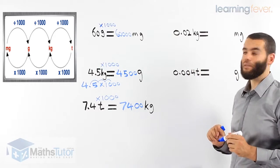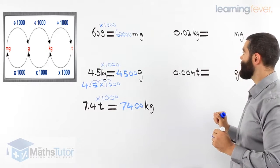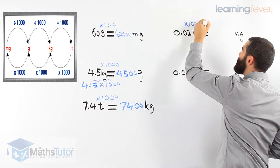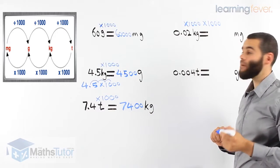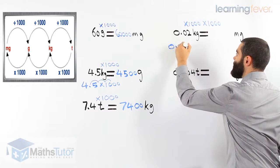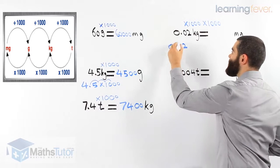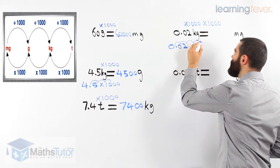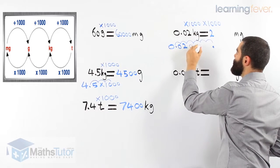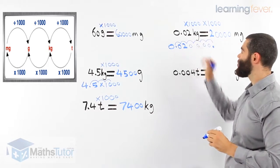Zero point zero two kilograms — how many milligrams is that? We're going from kilograms all the way to milligrams, so it's two stages. We have to go from kilograms to grams, times by a thousand, and again from grams to milligrams, times by another thousand. So in reality we're timesing by a million. Zero point zero two times a million — we jump six places to the right. Our point goes there, giving us twenty thousand milligrams in zero point zero two kilograms.